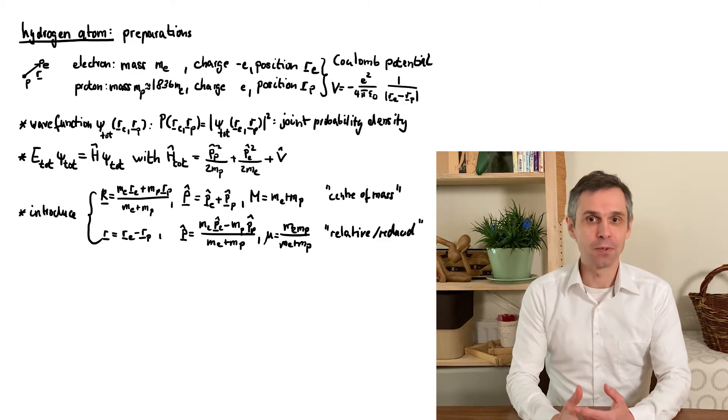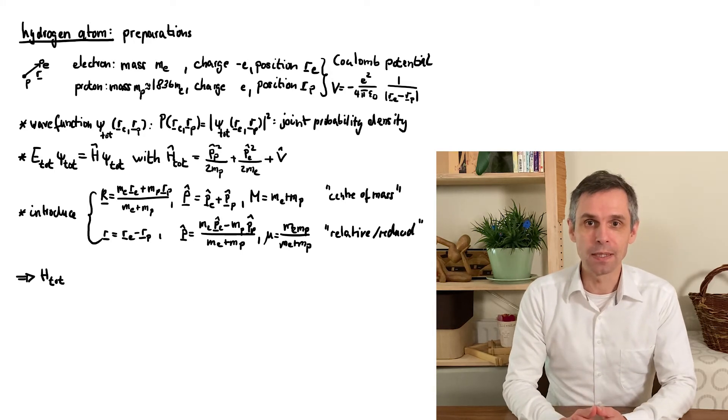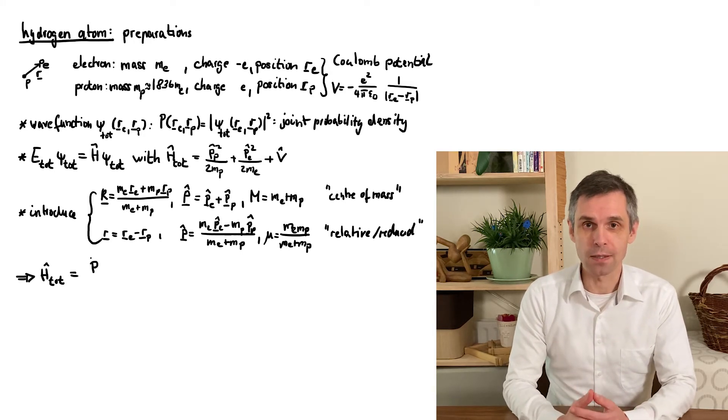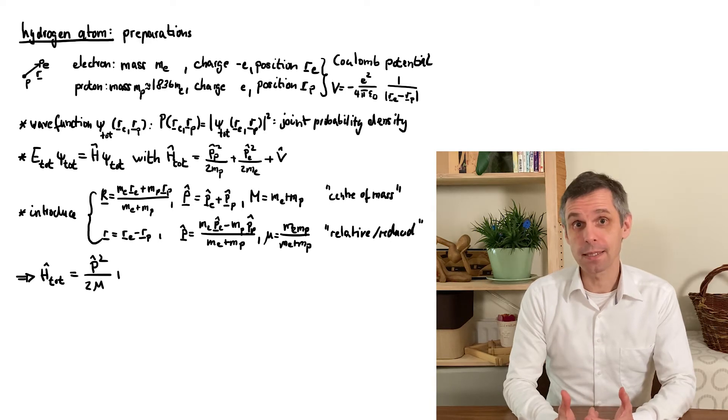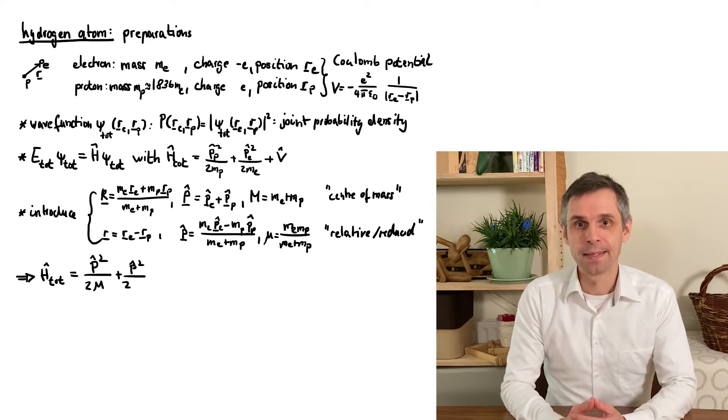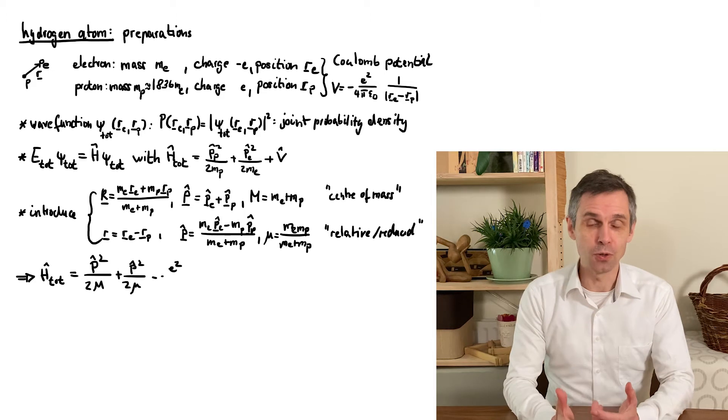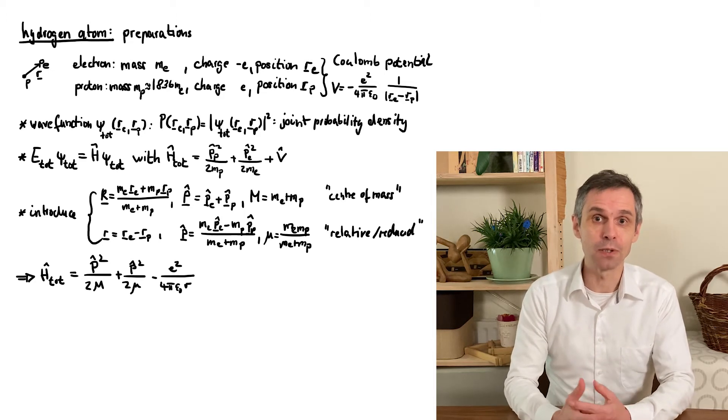Here we simply use this to rewrite the Hamiltonian, which really amounts to rewriting the two Laplace operators. But algebraically it is much simpler. The key observation is that these new objects still have the normal commutation relations between positions and momentum.